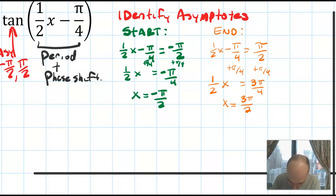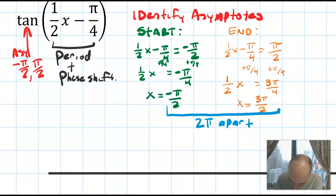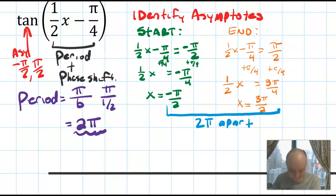Now I want to check on something. The distance between these two asymptotes is from negative π/2 to 3π/2. That's basically a full circle. So the distance is 2π. Those asymptotes are 2π apart. Now if I check what I know about tangent, which is that the period is π over b and I do π over 1/2, I should get 2π. So the distance between the asymptotes that I calculated is the same as the period that I calculated. That had better be true. If it was false, that would be a mistake I would have made.